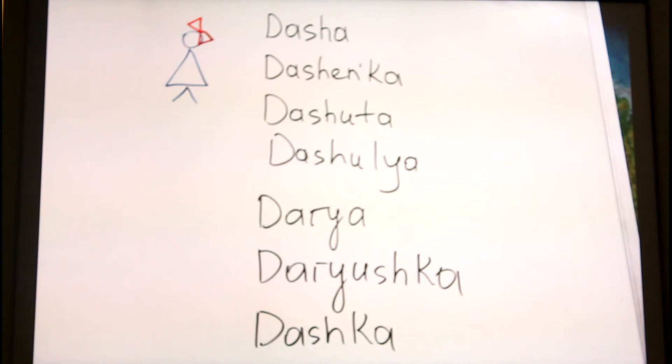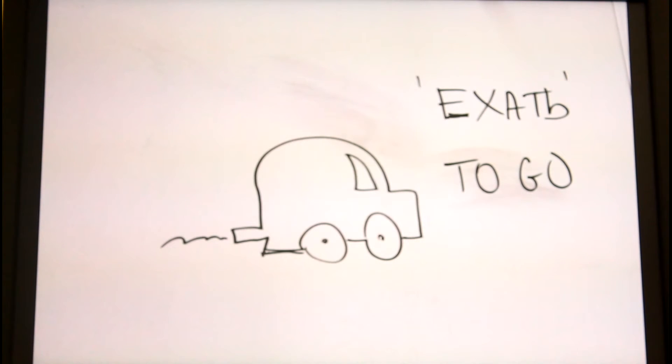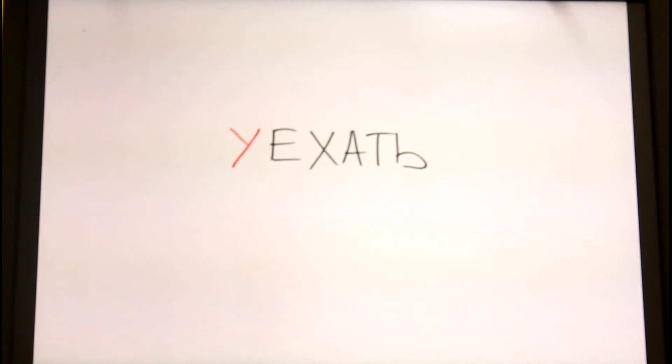The only difference is its formality. With verbs, it's even better. Let's have a look at the word EKHAT', that means to go. These are ways you can play with this word: UEKHAT', VEKHAT', ZAEKHAT', VYEKHAT', OBIEKHAT', DOEKHAT', SEKHAT', OBIEKHAT'.